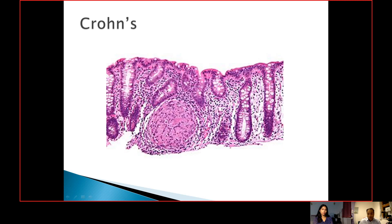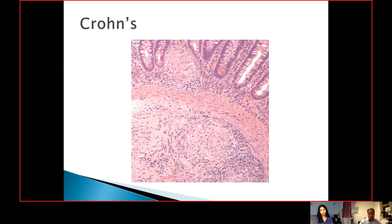What you see are these crypts which show very minimal crypt architecture distortion. At times the crypt architecture remains unremarkable as well. What is most striking here is this granuloma, and then this patchy distribution of the inflammatory cells in the lamina propria. This area here is pretty much unremarkable, whereas it's more busy on this side. On higher power, what you see is a striking feature — again, it's this granuloma, which is seen in the mucosa and also in the submucosa.